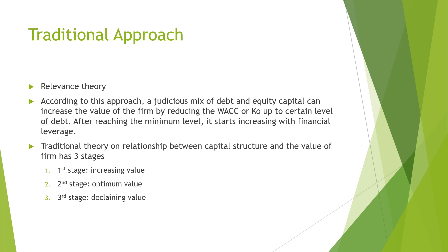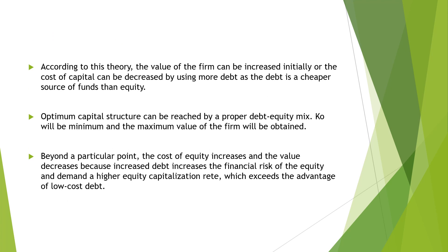The net operating approach to this intermediate approach — it is an intermediate theory. According to this traditional theory, the value of the firm can be increased initially by using debt in the capital structure, because debt is a cheaper source of funds than equity. Initially, using debt reduces the overall cost of capital. The reason is that debt — that is, the interest — is cheaper than the cost of equity.